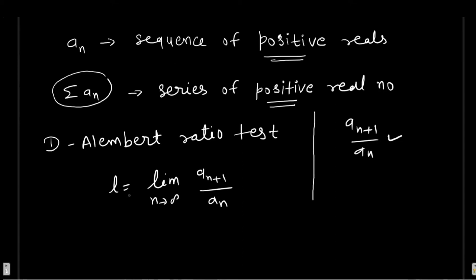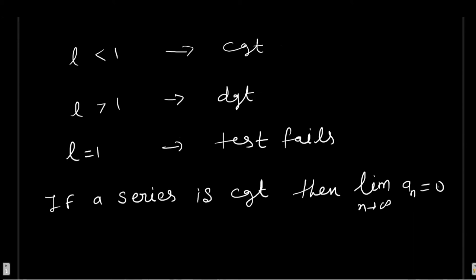This is the D'Alembert ratio test. If l is less than 1, the series is convergent. If l is greater than 1, the series is divergent. If l equals 1, the test fails. The series can be either convergent or divergent.